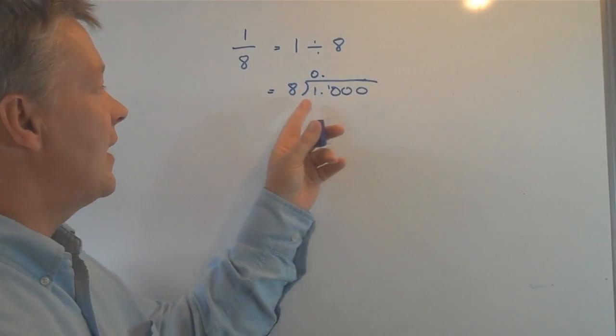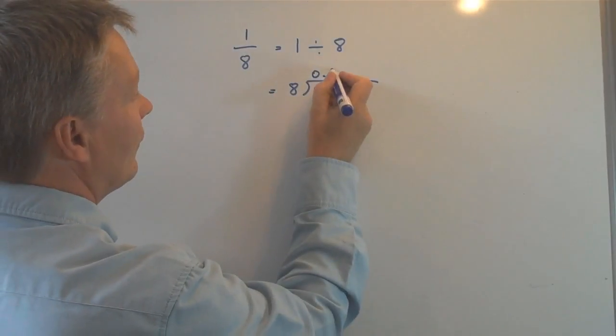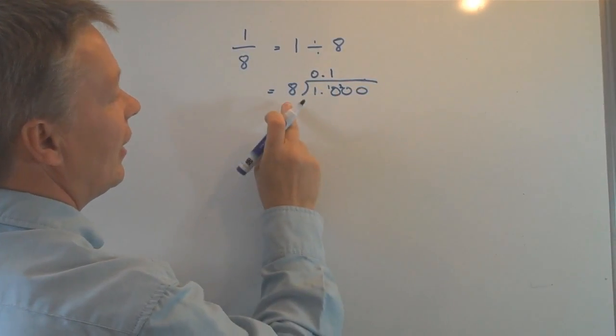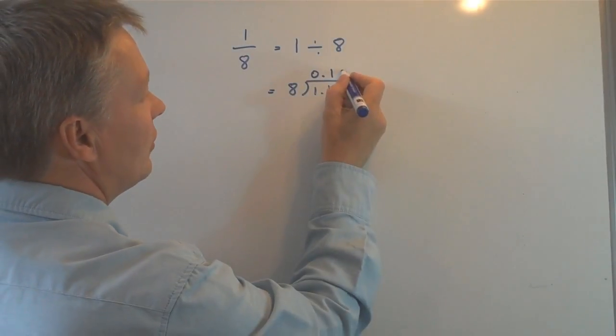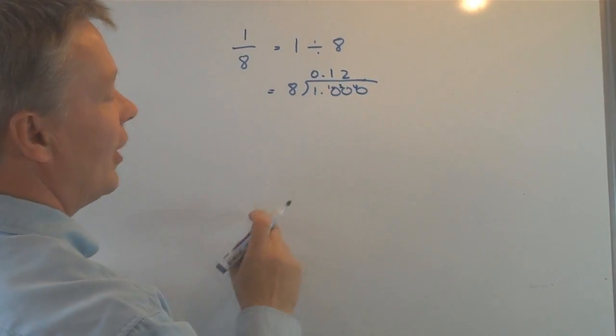How many lots of eight are there in ten? Well, there's one. And I have two left over. How many lots of eight are there in twenty? Well, there's two, which is sixteen. And there is four left over.